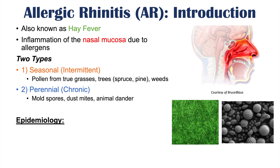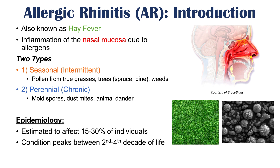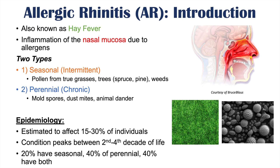Allergic rhinitis is a relatively common condition, estimated to affect 15 to 30% of individuals. The severity of this condition peaks around the second to fourth decade of life. Broken down, approximately 20% have seasonal, 40% have perennial, and 40% have both.